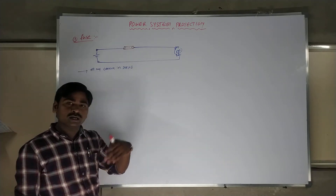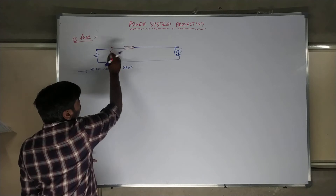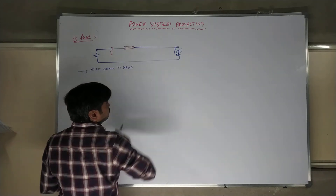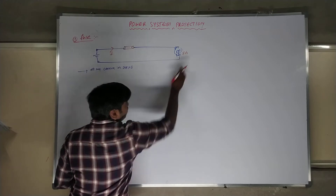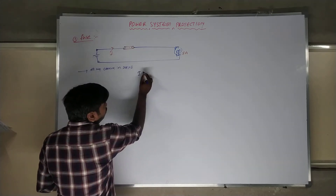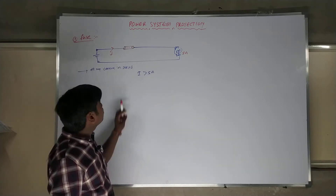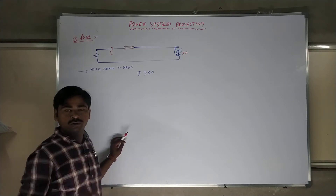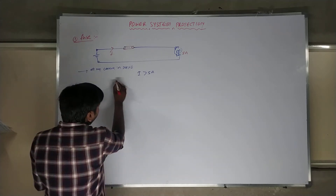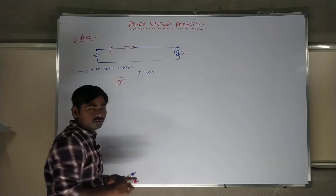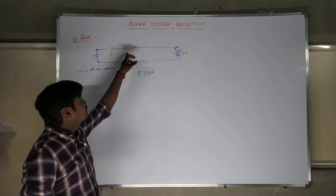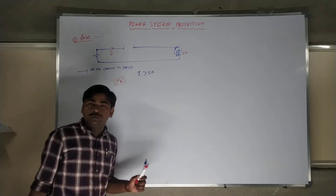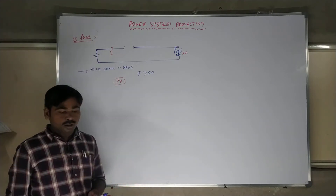Whenever excess current flows through the fuse — more than the rated current — for example, if the motor's rated current is 5 amperes and more than 5 amperes is flowing, the fuse starts heating. Whenever current exceeds the rated value, the fuse starts heating automatically, heat loss takes place (I²R), and at a certain point the wire starts melting. Therefore the circuit will open and your equipment will be in a safe zone. In such a way the fuse protects your system.